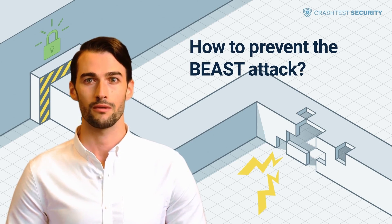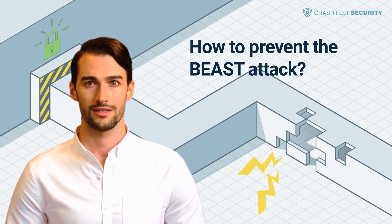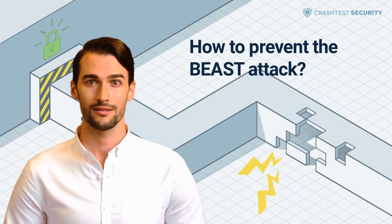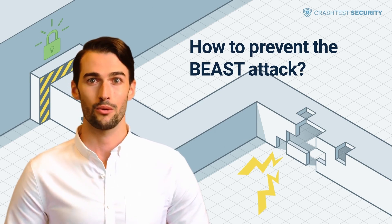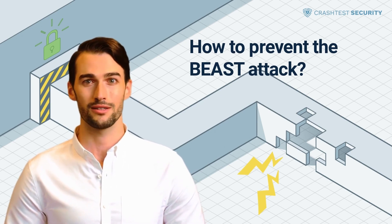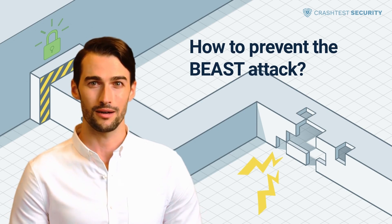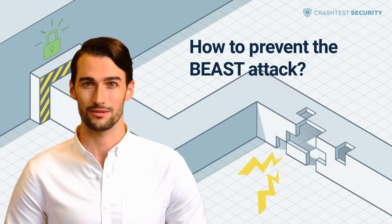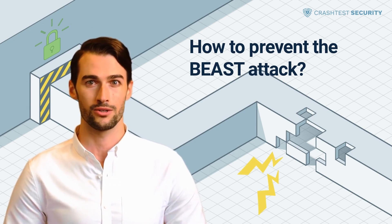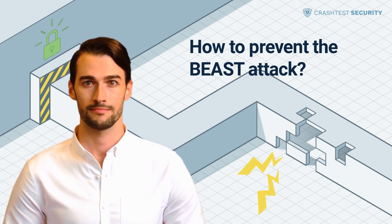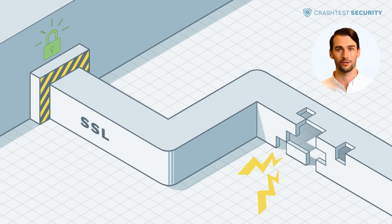Doing this also protects you from other security flaws that exploit vulnerabilities in SSL and earlier versions of TLS, such as POODLE or DROWN. To learn how to disable older versions of SSL and TLS, see our secure TLS configuration page. Try Crash Test Security today to discover how it integrates into your development stack for efficient, automated vulnerability scanning. The trial is free.